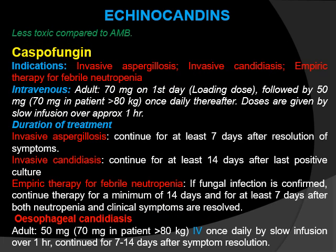Echinocandins are less toxic compared to Amphotericin B. Among the echinocandins, caspofungin is described here. Caspofungin indications are invasive aspergillosis, invasive candidiasis, empiric therapy for febrile neutropenia, and esophageal candidiasis.